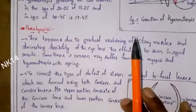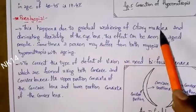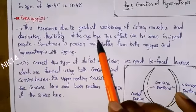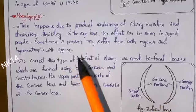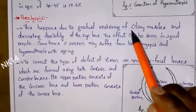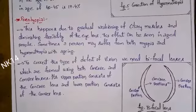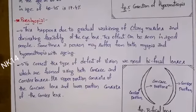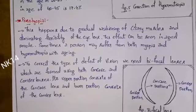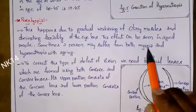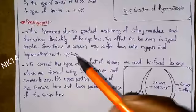Presbyopia is related to the aging factor; it occurs in old age. It happens due to the gradual weakening of ciliary muscles and diminishing flexibility of the eye lens. As age increases, the ciliary muscles get weak and the lens cannot adjust according to the incoming rays, leading to totally blurred image formation — both in front of and after the retina. Sometimes a person may suffer from both myopia and hypermetropia with aging.